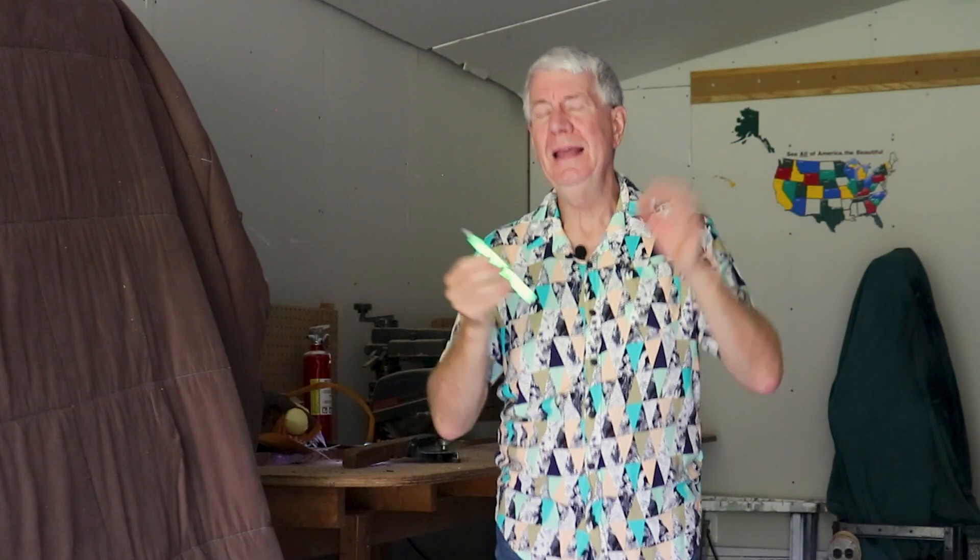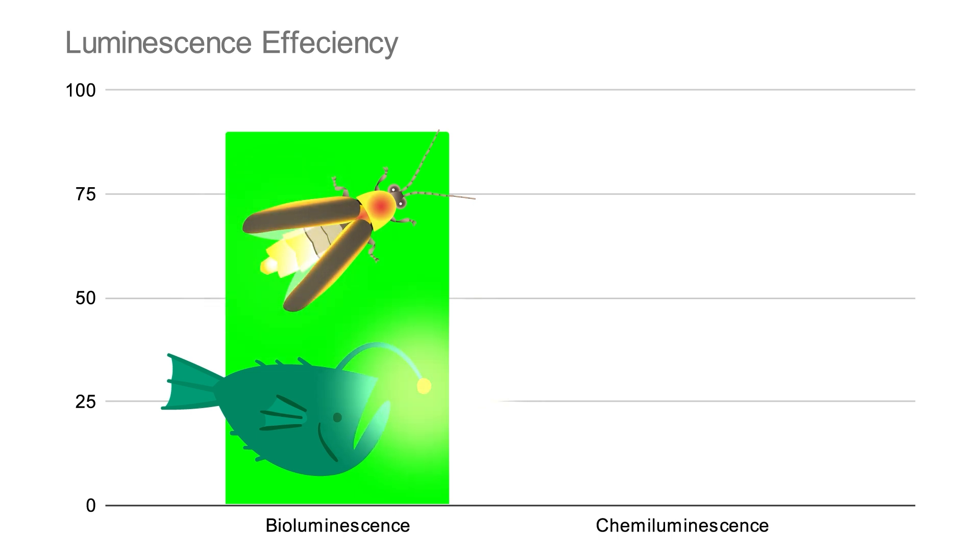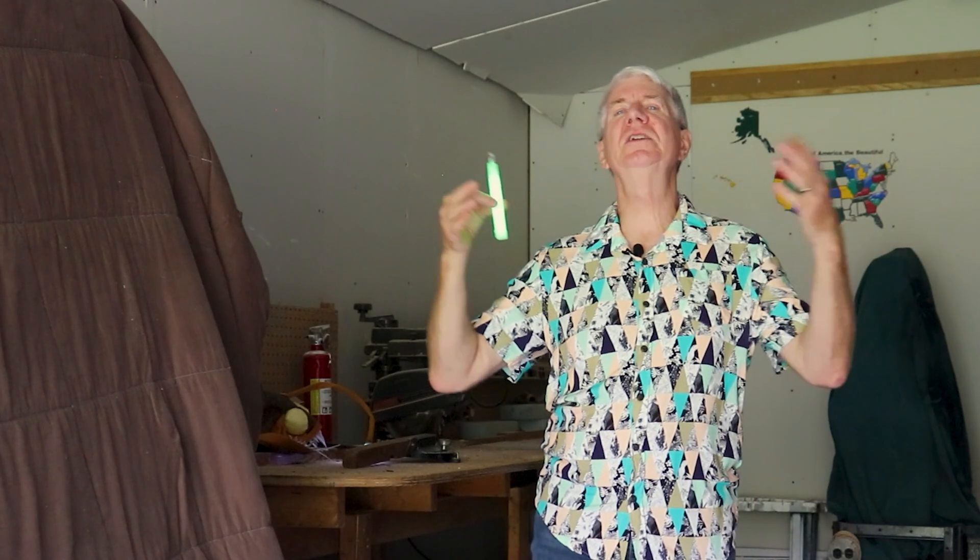One last thing that goes beyond even the complexity of it all. The chemiluminescence that God designed is about 90% efficient, producing almost no heat and almost all light. These light sticks are only about 30% efficient.